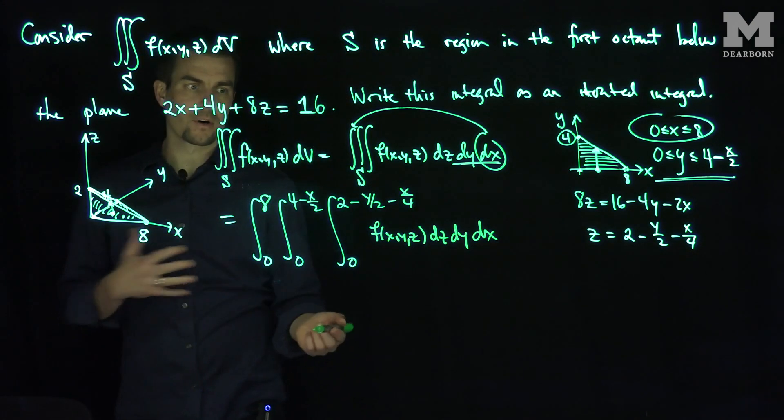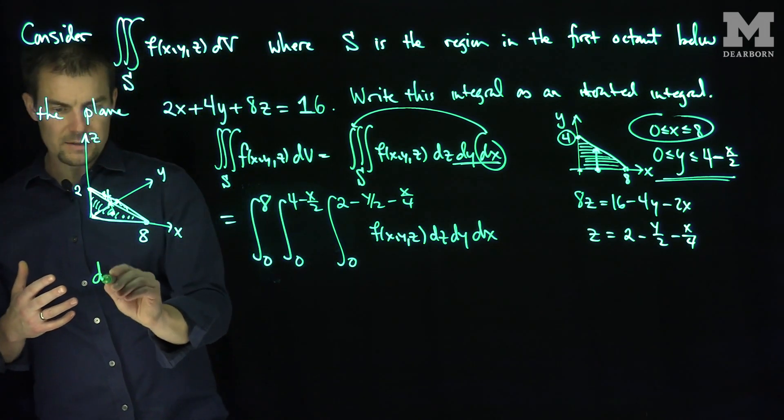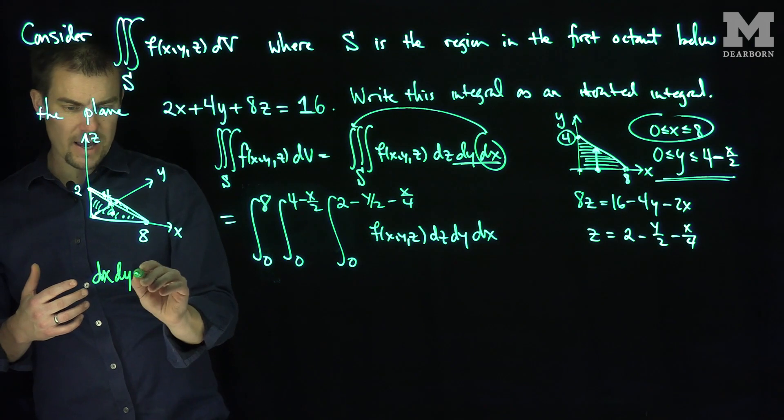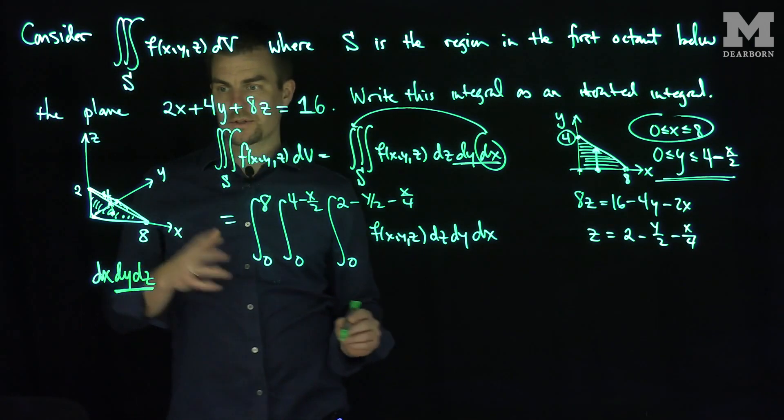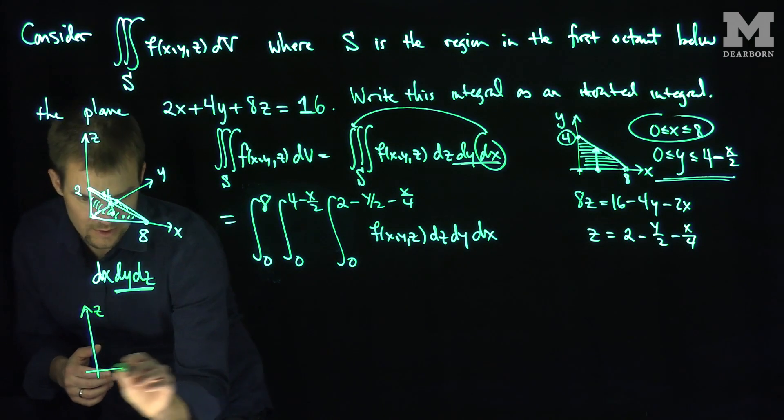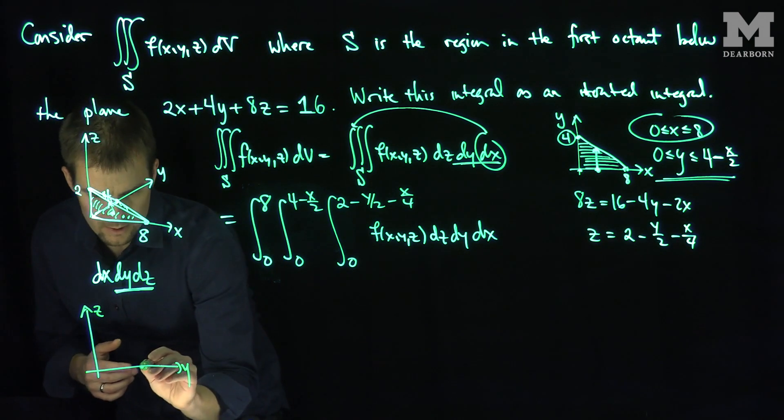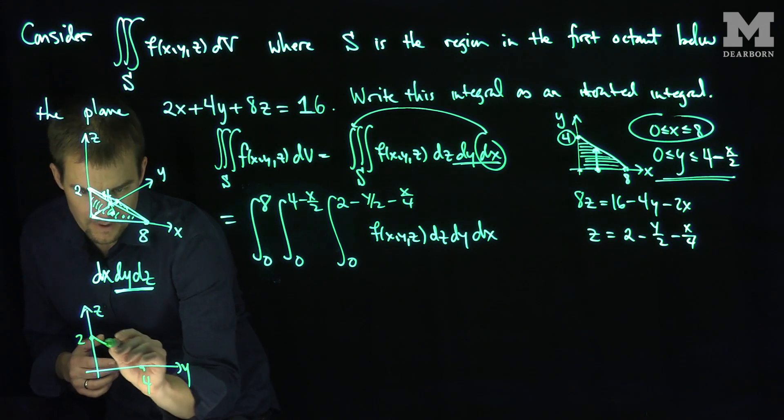Let's try one other order. Let's try a different order of integration. Let's try the dx, dy, dz. Now we focus in on the yz plane first. And so what does the yz plane look like? The yz plane looks like this. There's y and there's z. So y is at 4 and z is at 2. And that's our region.